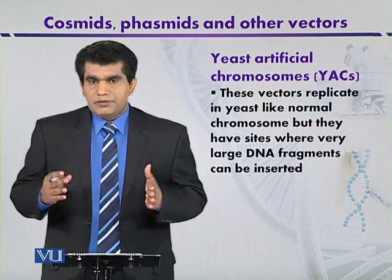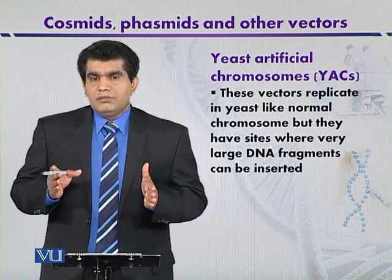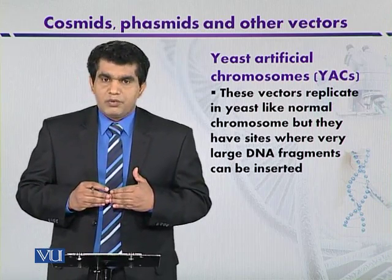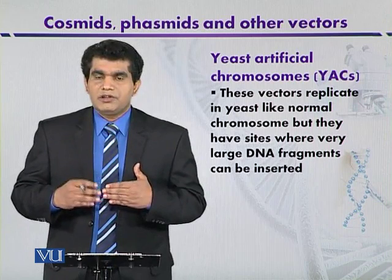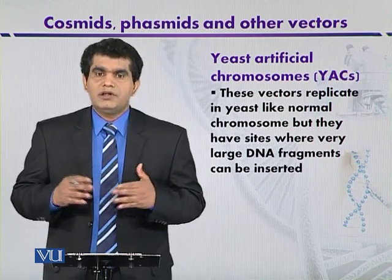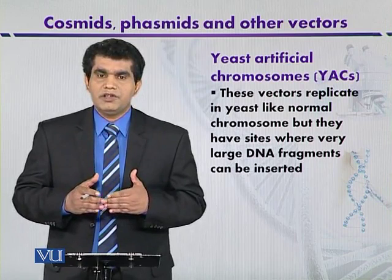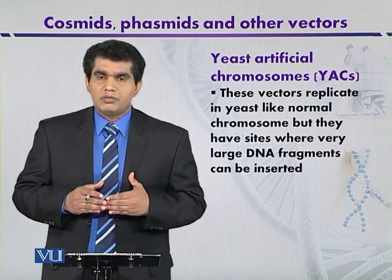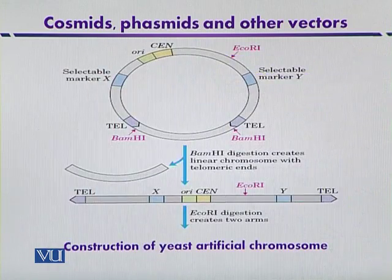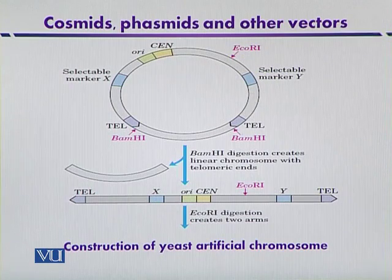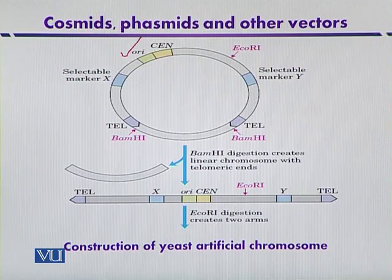Pulsed field gel electrophoresis is important because once the segments are purified and separated, they can be used to ligate with the yeast artificial chromosome. The strategy for cloning foreign DNA into a yeast artificial chromosome relies on the fact that it contains its own region of replication, so that it can replicate independently from the host chromosome.